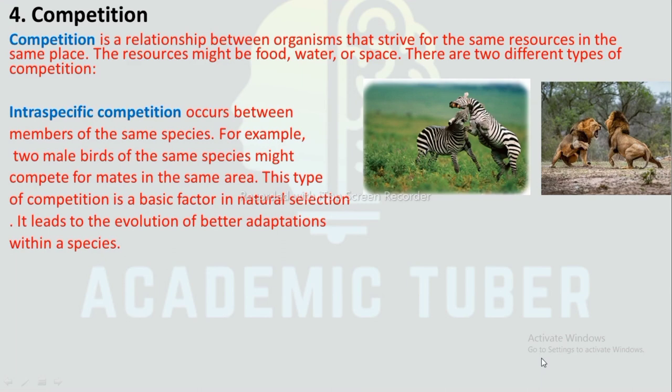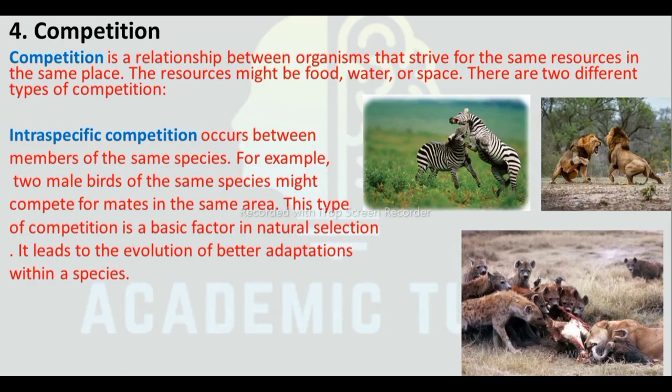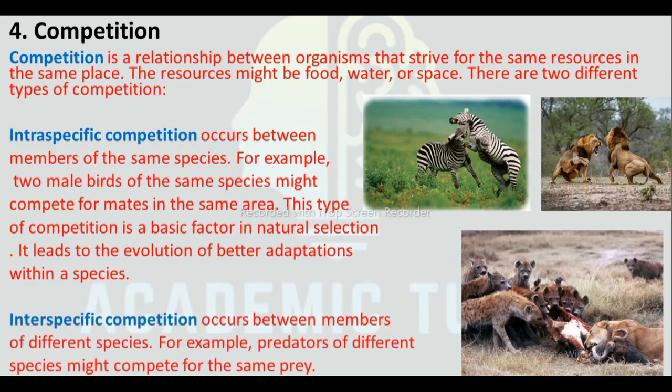Interspecific competition: Interspecific competition occurs between members of different species. For example, predators of different species might compete for the same prey. A hyena and a lion — being of different species — struggling for the same prey is an example of interspecific competition.